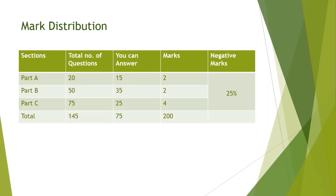For Part A you will get a total of 30 marks, for Part B you will get 70 marks, and for Part C you will get a maximum of 100 marks — making a total of 200 marks. There is a negative mark of 25 percentage for every wrong answer: for Part A that is 0.5, Part B minus 0.5, and Part C that is 1 mark for every wrong answer.